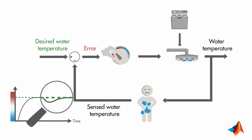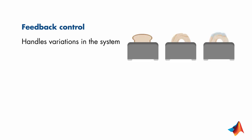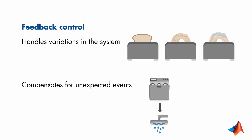To summarize, in this video, we've seen how feedback control works, how it handles variations in the system, and how it compensates for unexpected events.